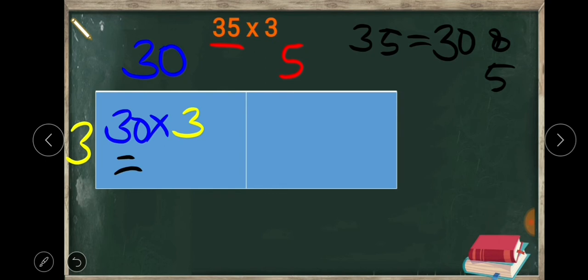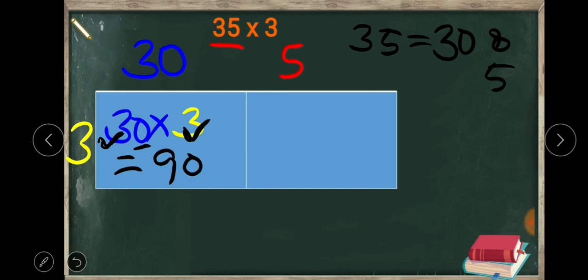In the case of multiplying a 2-digit by a 1-digit number, there is a trick. Here we first multiply ignoring the zero. So we have 3 and 3 — just neglect the 0 and multiply 3 into 3, which is 9. The remainder is the 0, so 30 into 3 is 90. Actually, 30 means 3 tens, and 3 tens into 3 is 90.